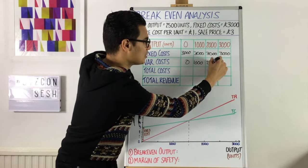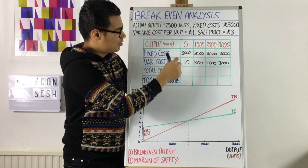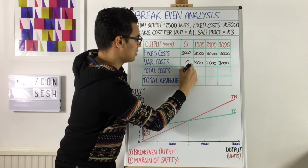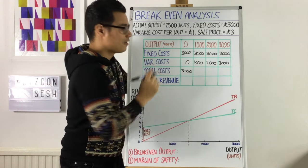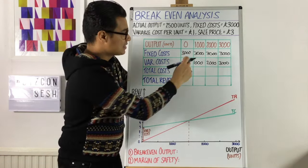Now we know that total costs is just fixed costs plus variable costs. So we add this column to this column to get this column. So if we do it here, fixed costs plus variable costs, in this case, would be £3,000 plus zero, so that's still £3,000. And in the second column, £4,000. And in the next column, for 2,000 units, £3,000 plus £2,000 is £5,000. And in the final column, £3,000 plus £3,000 is £6,000.